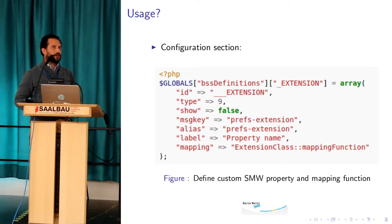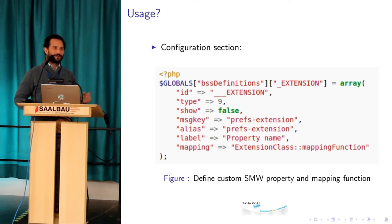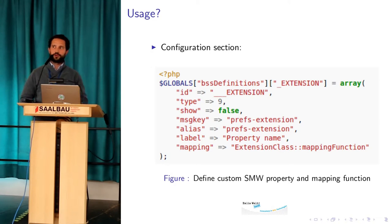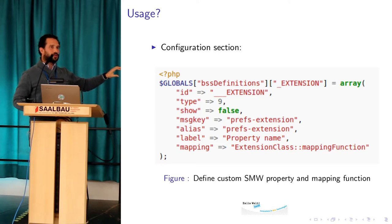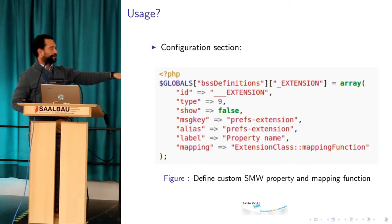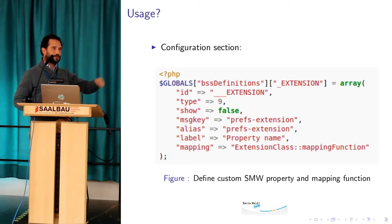After that — this is more interesting for developers, but later we will see some practical examples. You define most things, and if you're a developer you'll know it's mostly equal to the definition of special properties from the original extension. The difference is just the mapping function, which provides the data for the current page.